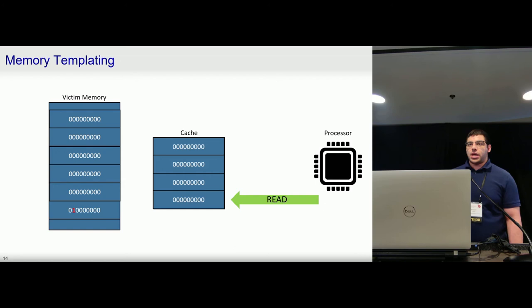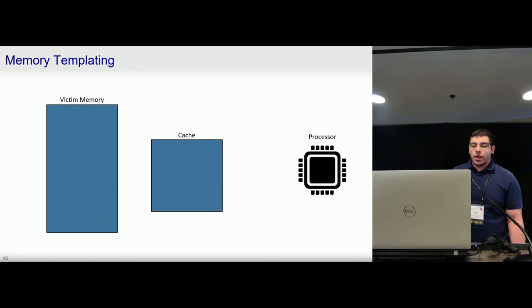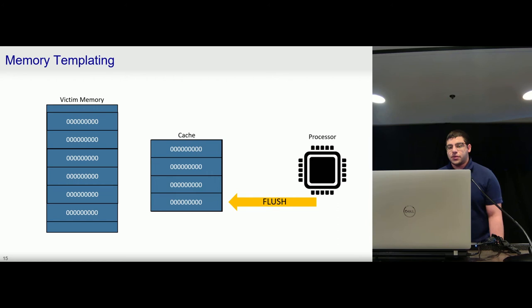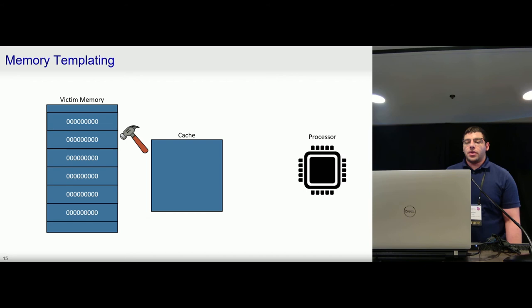And when we come to read memory to check for our flips, we're just checking our cached initialization data. So we end up missing flips. So we made a simple modification where we initialize memory, again, by writing all zeros in this case, causing this data to get pulled into the cache. Now we flush these values, pushing them back into memory, ensuring that our next access will be a cache miss. We do our hammering to induce our bit flips. And now when we read memory to check for flips, we're going to have a cache miss, ensuring that we can see any flips that happen in DRAM.